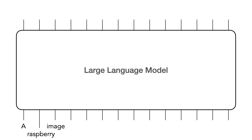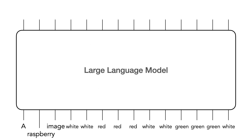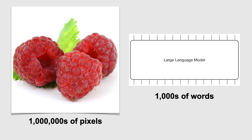We can now use a large language model to generate images. We just give it a prompt like this — a raspberry image — and it will generate the pixels one at a time. But there's a problem with this approach: images have millions of pixels, but today's large language models can handle only a few thousand words at a time.